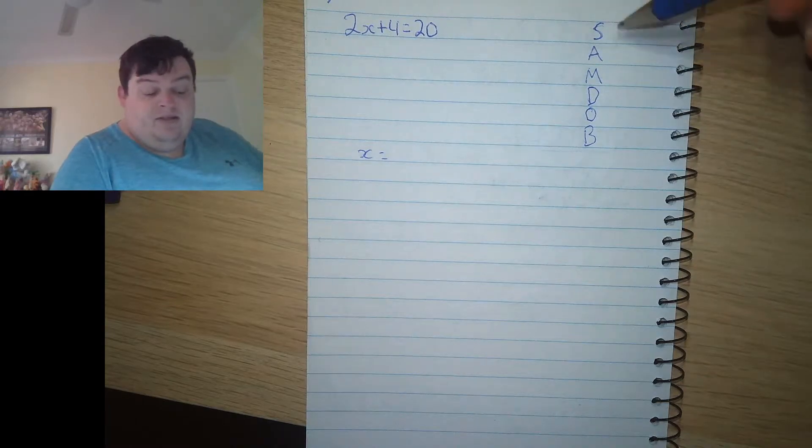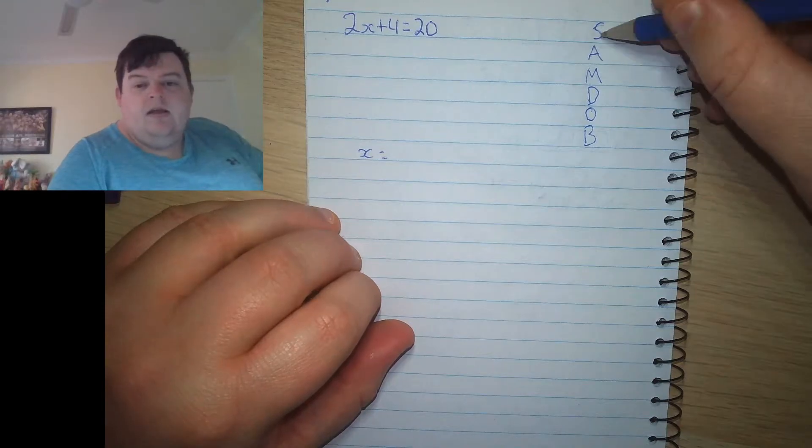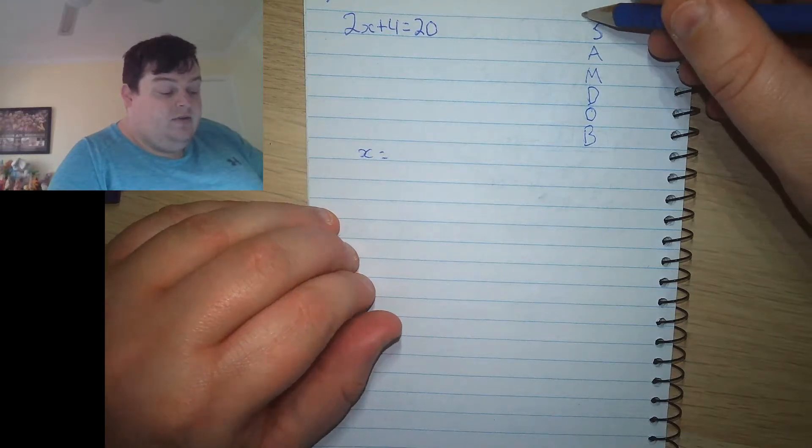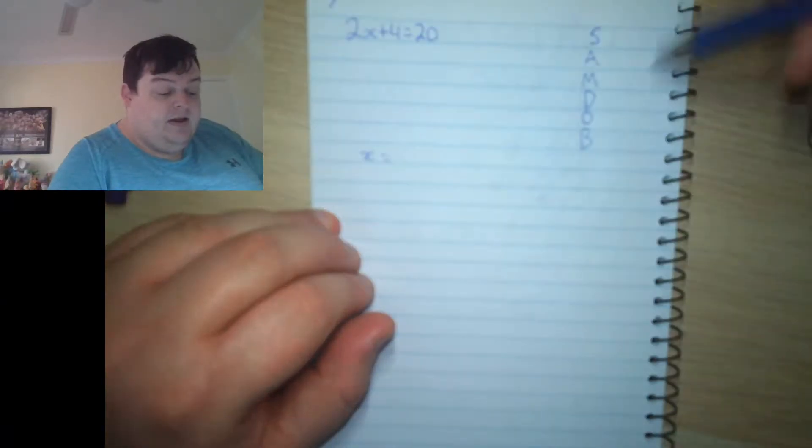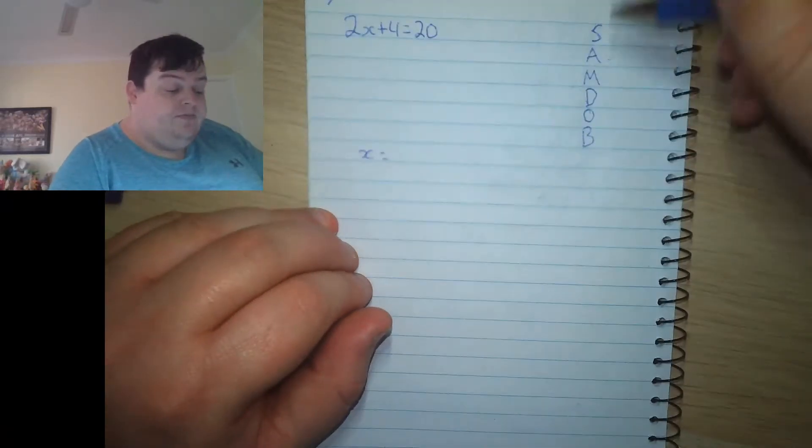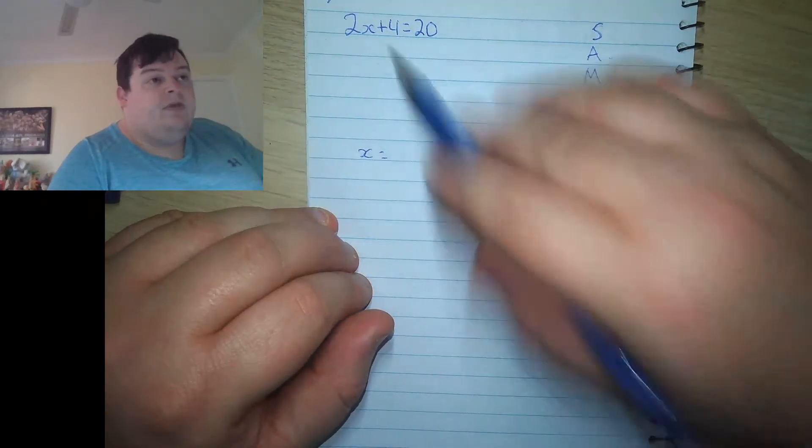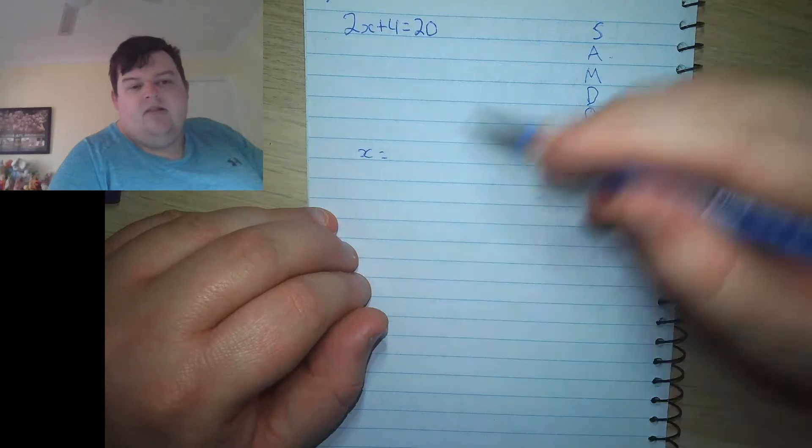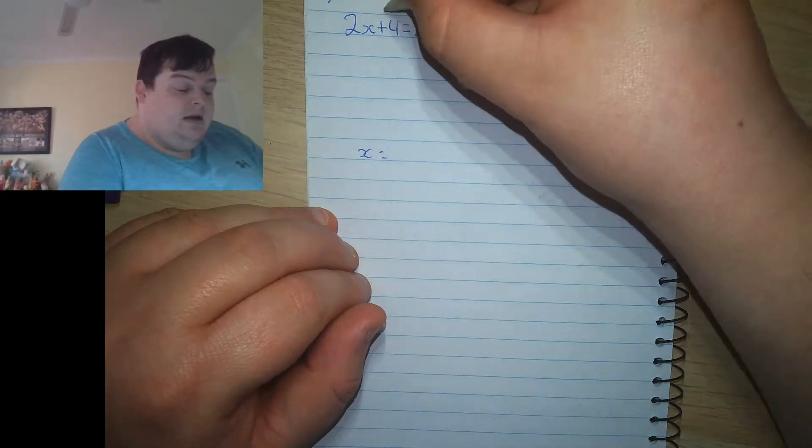But you might be wondering what order. That's why we have BodMaths backwards. So firstly, are there any subtractions that I can undo? Well, no, there's only a multiplication and addition. Okay, so next one. Addition. So I can undo this addition now. So in order to cancel out a plus 4, I need to subtract 4.